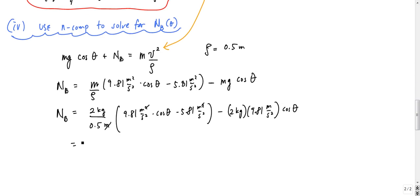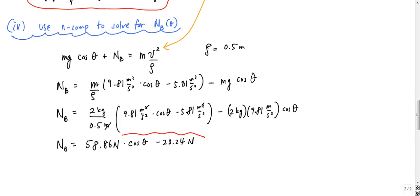When I work all this out, N_b in proper Newton units is 58.86 Newtons times cosine of theta minus 23.24 Newtons. That's N sub b. If you don't believe me, just work out the math and you'll get it there.